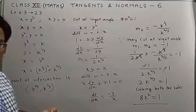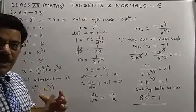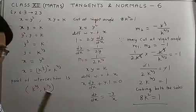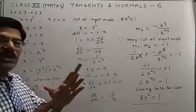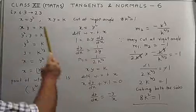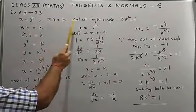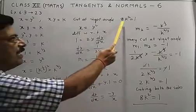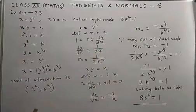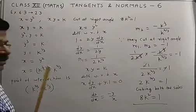In this video we will discuss a very important and different question on the topic of angle between two curves. Now given two curves cut at right angle, then show that 8k² = 1.